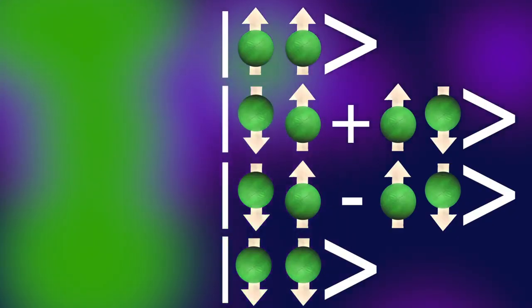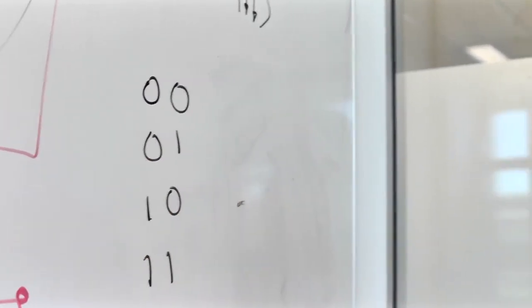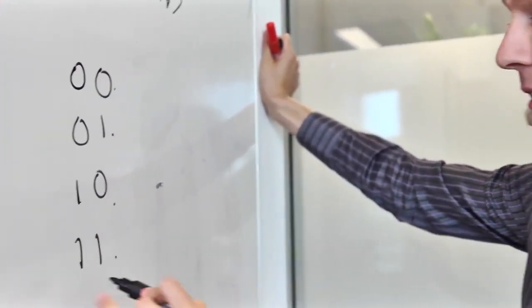Now there are four possible states of these two electrons. You could think that's just like two bits of a classical computer, right? If you have two bits, you can write 00, 01, 10, 11 — four numbers. But these are still just two bits of information. All I need to say to determine which one of the four numbers you have in your computer code is the value of the first bit and the value of the second bit.